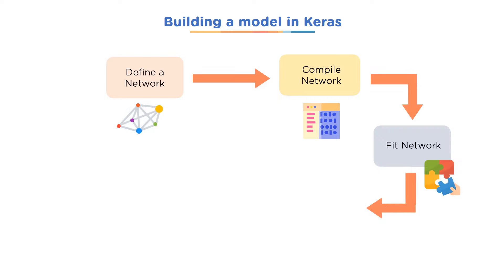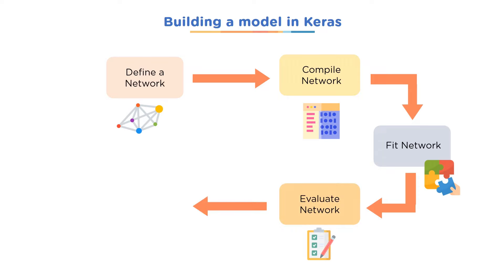After compiling, you fit all your training data to the network and use your testing data to evaluate how the network performs. Finally, you use the network to make predictions. This entire five-step pipeline can be executed in Keras within two to three lines of code. Neural networks that would have taken days or even weeks to build can be executed in Keras in just a couple of hours.